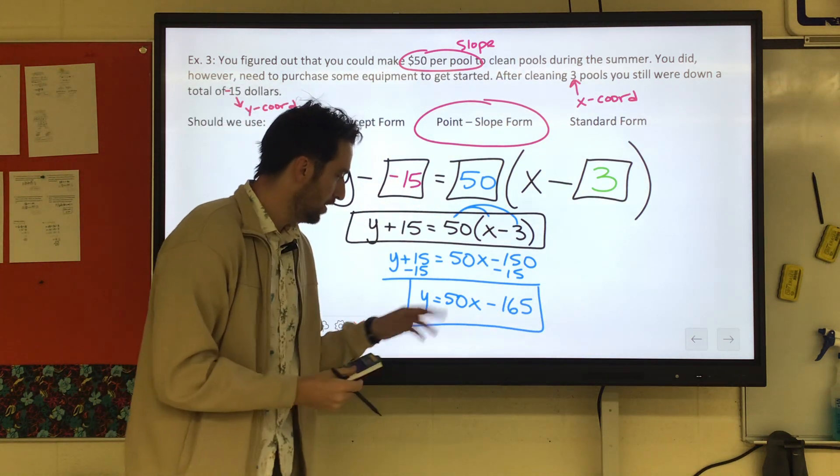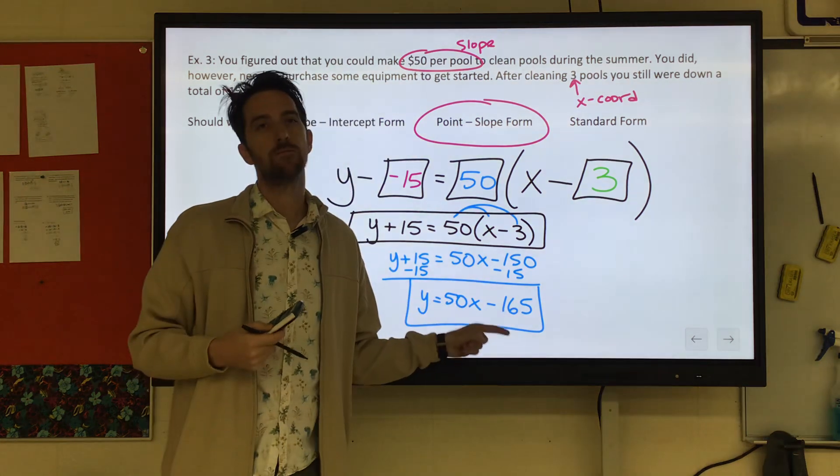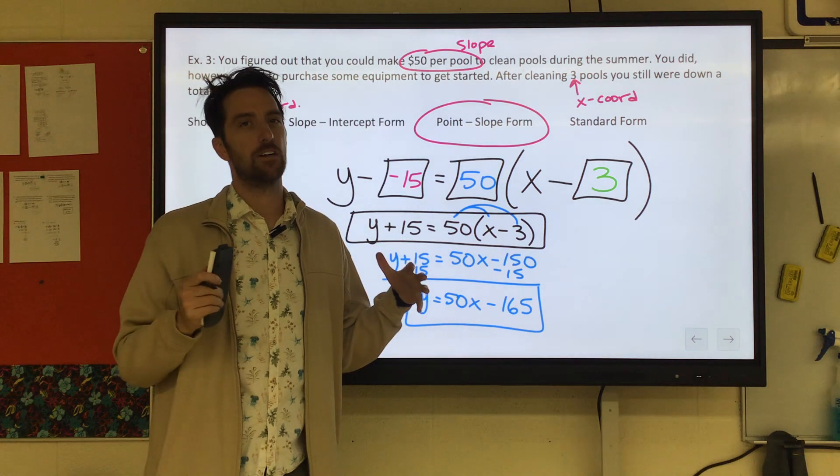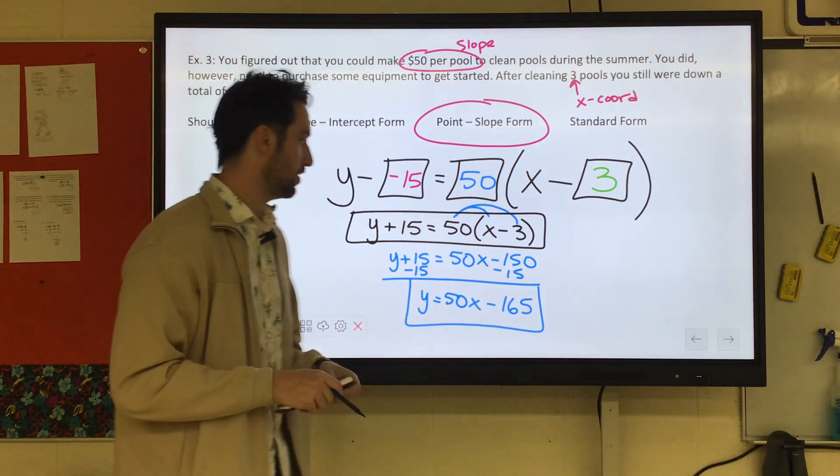Now think of what that means. The slope's 50. That's how much we get per pool. But our y-intercept is negative 165. That means that we had $165 of expenses that we're trying to pay off. That's our negative 165.